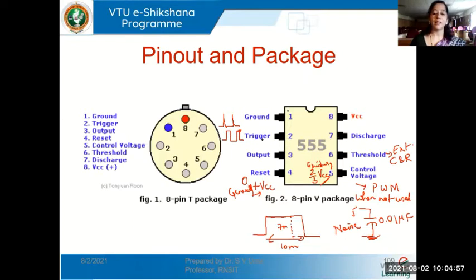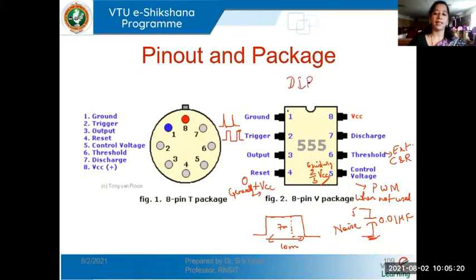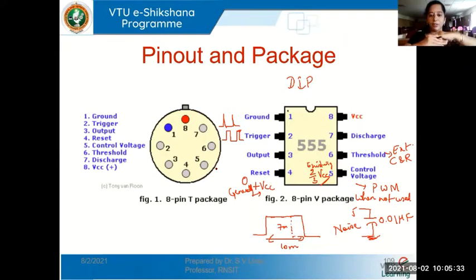These are the various pins. We show an 8-pin TO package — the round one — and there can be a metal can on top to avoid heat. This is also an 8-pin DIP package, similar to the dual inline packages you have normally seen in the lab. The IC is present between two layers of silicon and the pin-outs come from the central part.